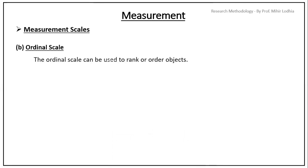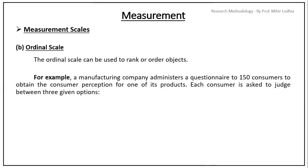Ordinal scale. The ordinal scale can be used to rank or order objects. For example, a manufacturing company administers a questionnaire of 150 consumers to obtain the consumer perception for one of its products. Each consumer is asked to judge between three given options. Excellent, good and poor. Excellent for one, good for two and poor for three.